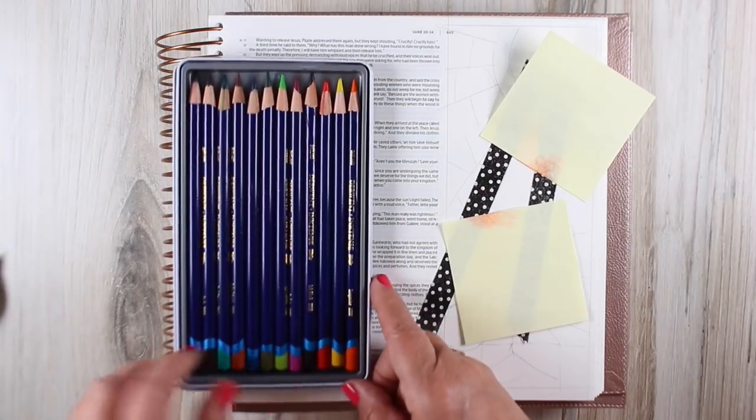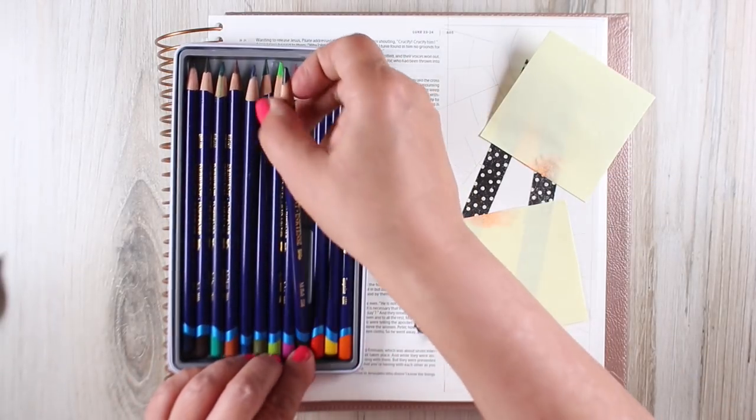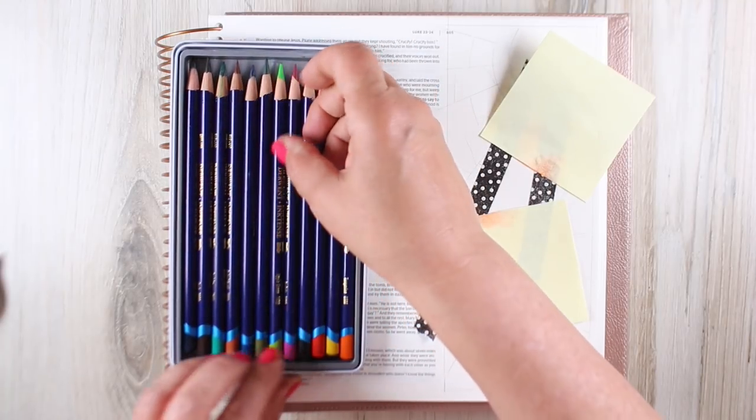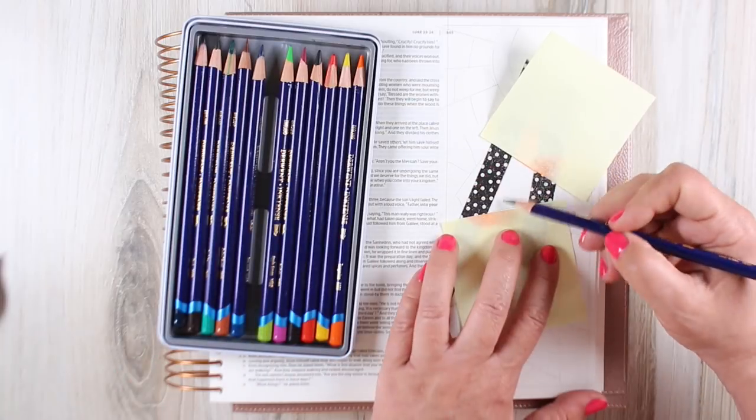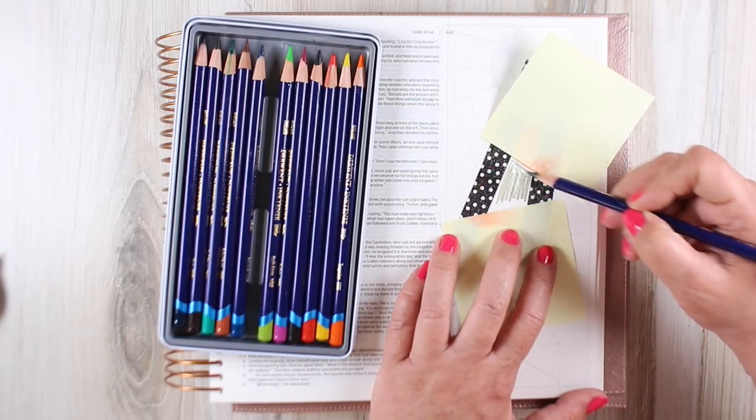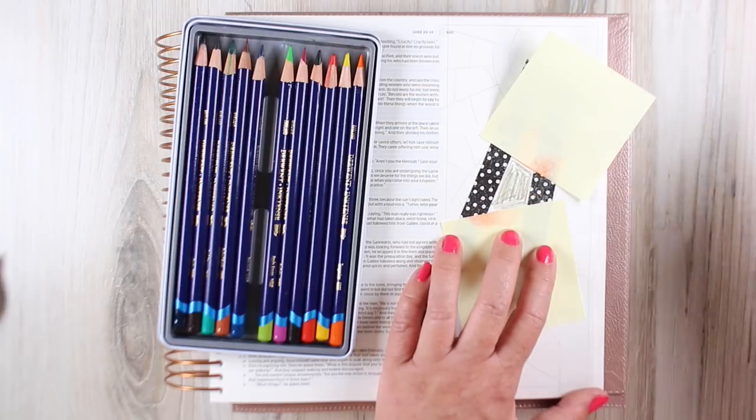I may even do another one like this soon because I love it so much. You'll probably see that on the Bible Journaling Made Simple Facebook group if you're part of that. The pencils I'm using here are Inktense pencils—they're much brighter than a lot of the watercolor pencils.